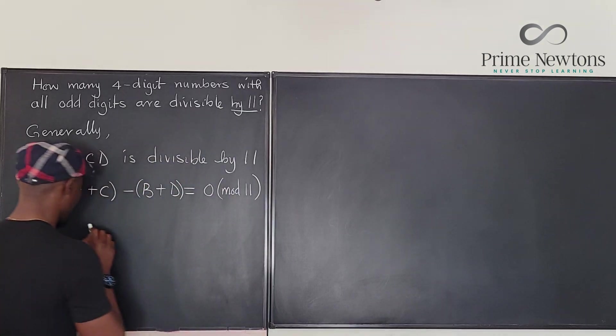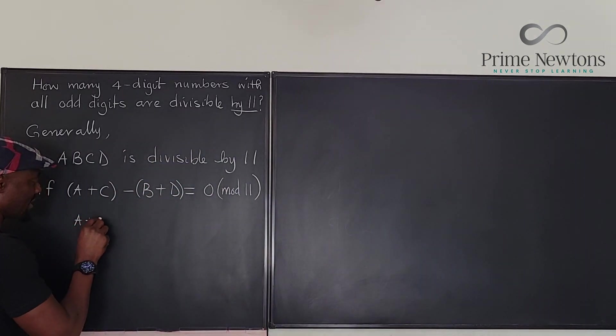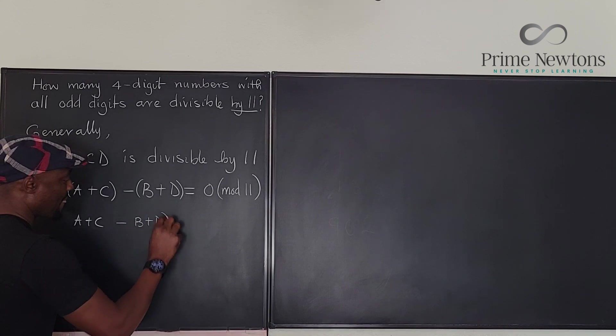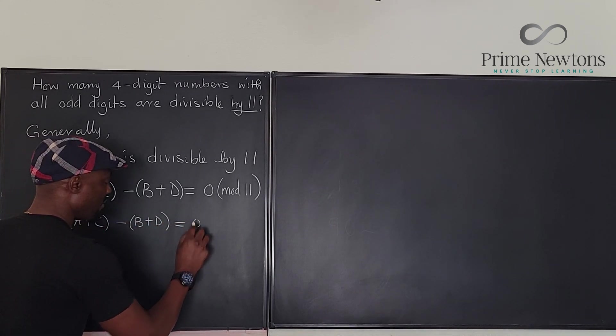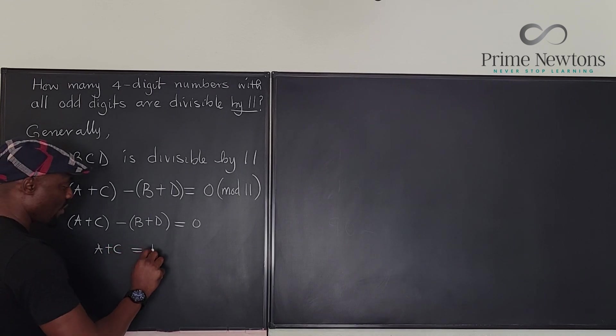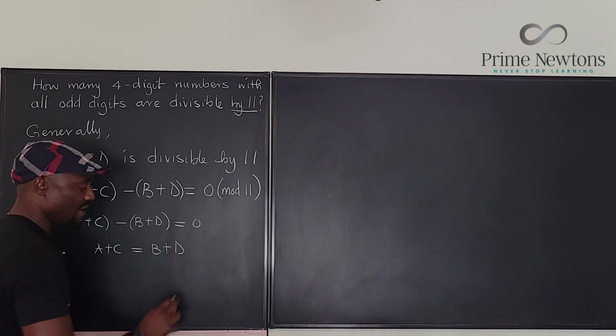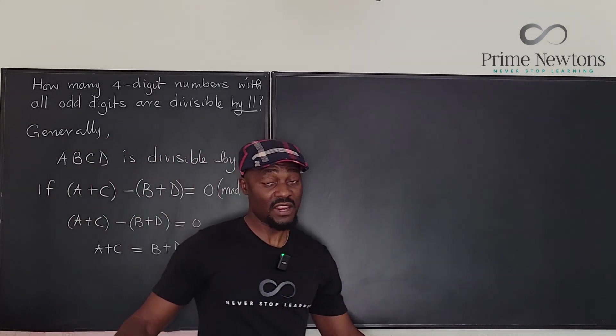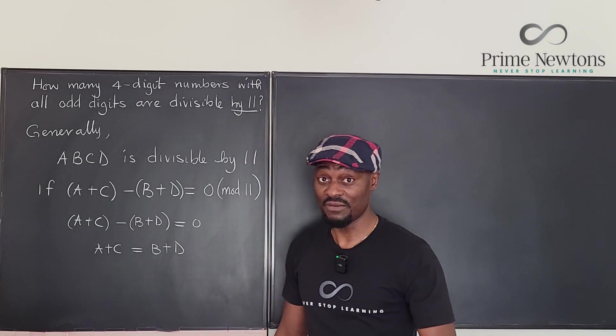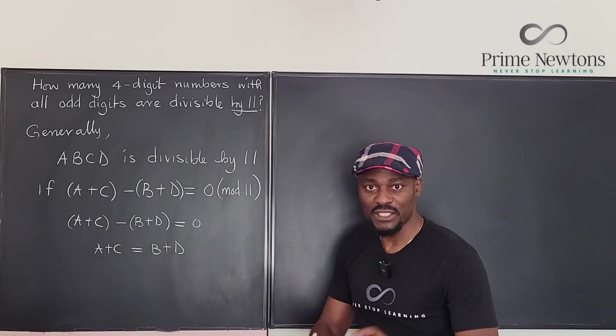So I can easily say that A+C-B-D is equal to 0, which means that A+C will be equal to B+D for all the 85 digits that we're going to get. The answer is 85. Let's begin.